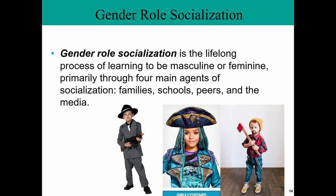Gender role socialization is the lifelong process of learning to be masculine or feminine, and it occurs primarily through the four main agents of socialization: family, peers, schools, and the media. We teach children how to be boys and girls throughout their lives, and as adults we continue the process of learning to be men and women. One area where we see heavy gender role socialization is Halloween costumes.